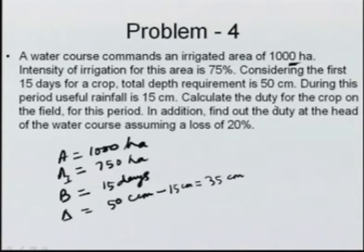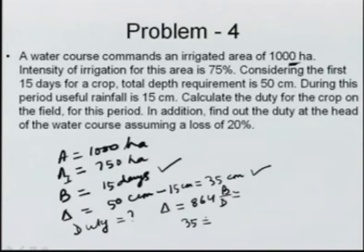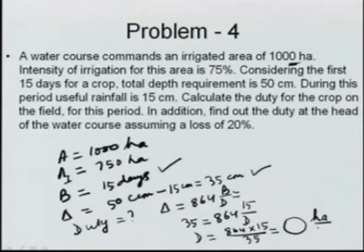To calculate duty on the field, use delta = 864 × B / D. So 35 = 864 × 15 / D, giving D = 864 × 15 / 35. Whatever number you obtain, the unit will be hectare per cumec. This is the duty on the field.